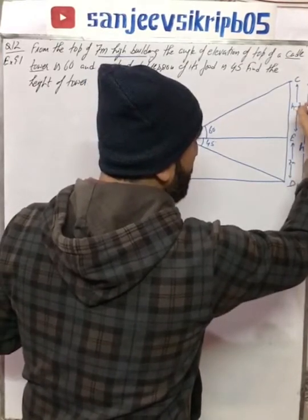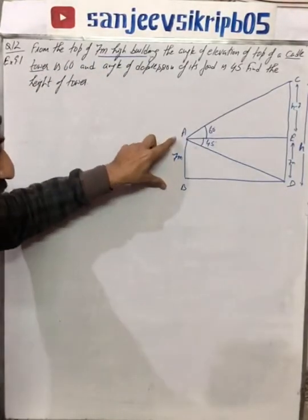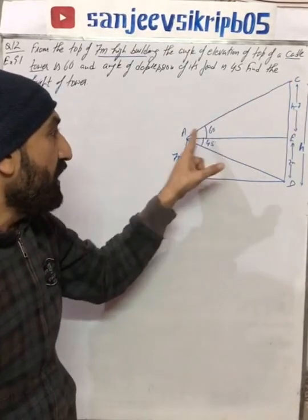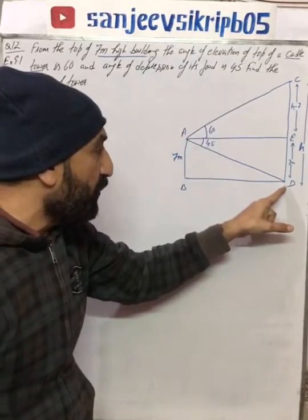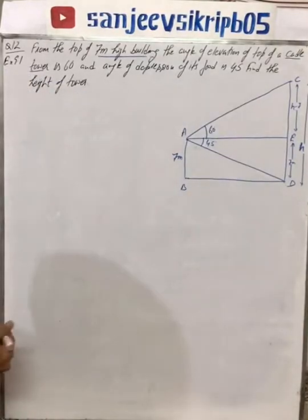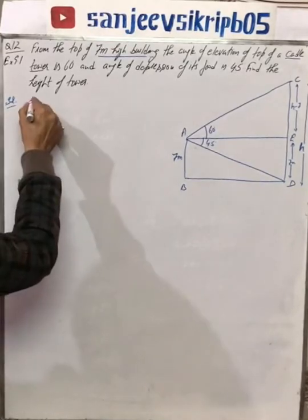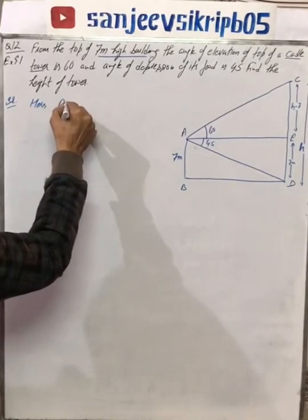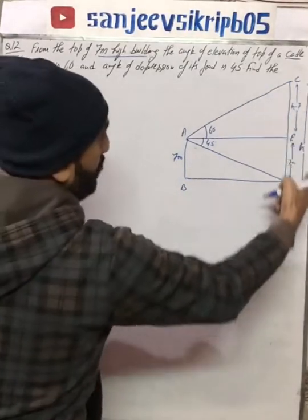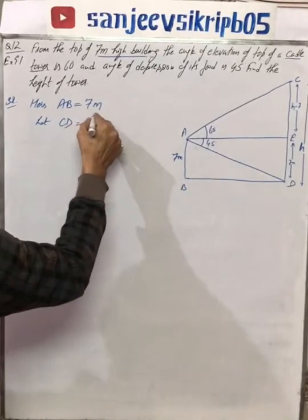I hope the diagram will help you understand: from the top of a 7 meter high building, the angle of elevation of the top of the cable tower is 60 degrees. From the same point, the angle of depression of the foot is 45 degrees. We need to find the height of the tower. So we have two triangles. Let's write the terms which we have and which we need to find. We have given AB which is 7 meters, and let CD be equal to H meters.